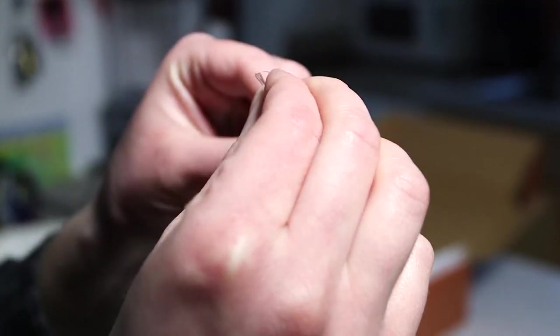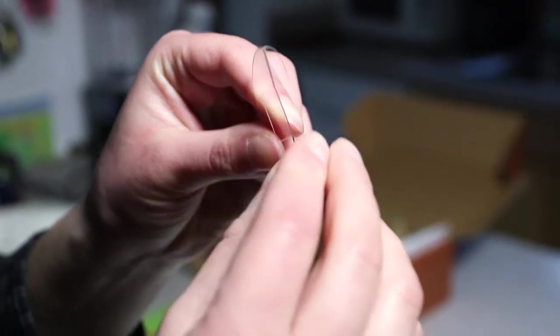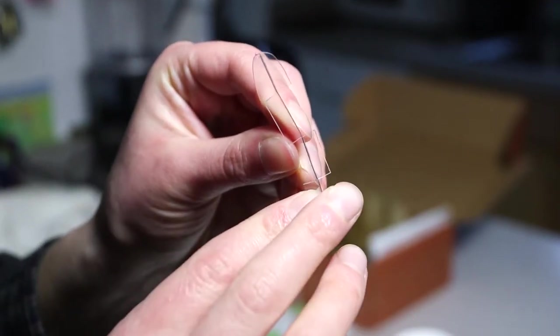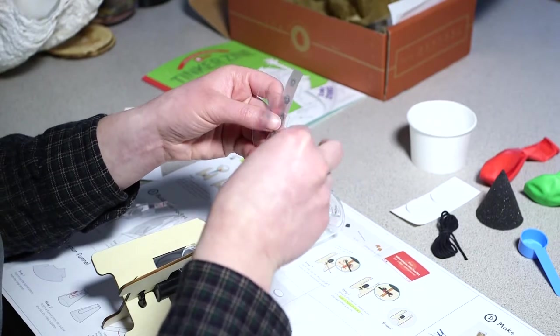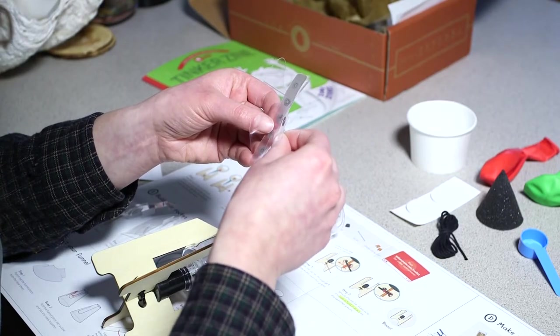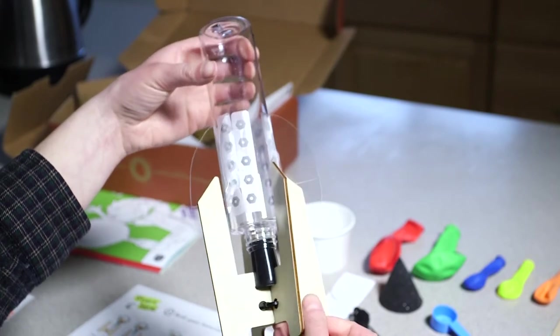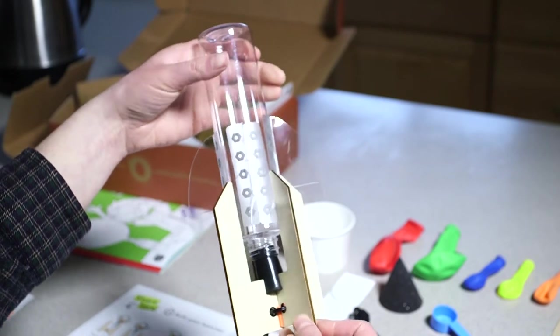Step number three: fold the four flaps on the side of each fin in alternating directions. Use the rivet stickers to attach each fin to the bottle. Make sure the four fins are evenly spaced around the rocket.